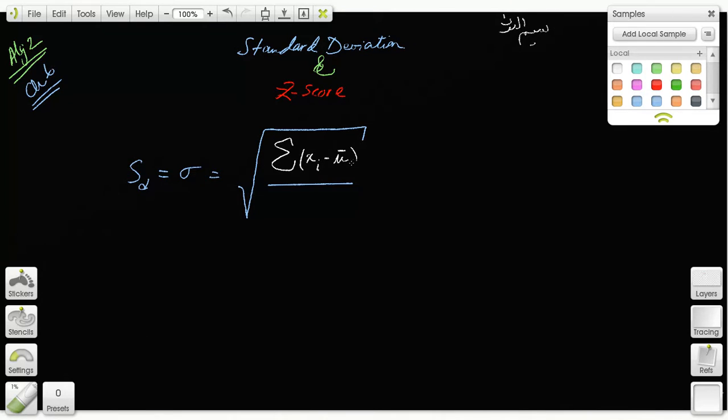Or x sub i minus the mean, every one subtract the mean, or this mean, whichever you like to say. I'm going to use mu because we have previously used mu over here for every x sub i, for every i from 1 to n, n being the number of data, over n.